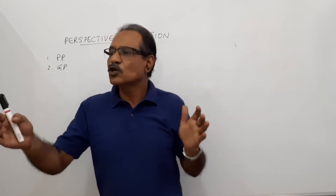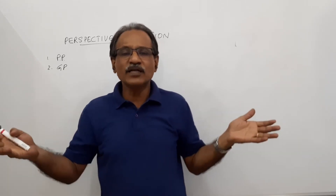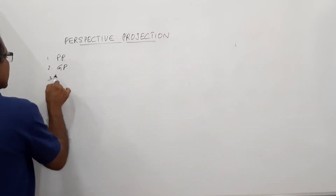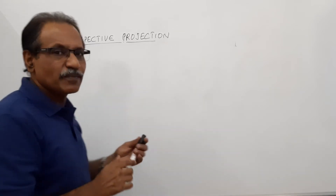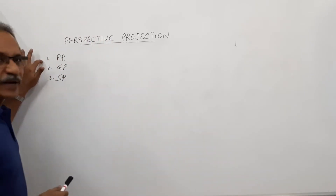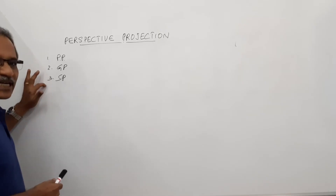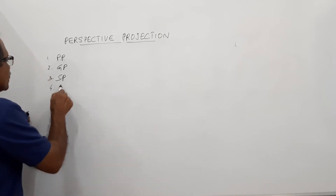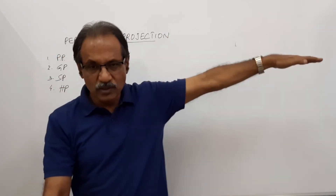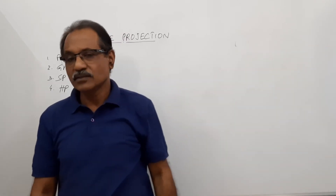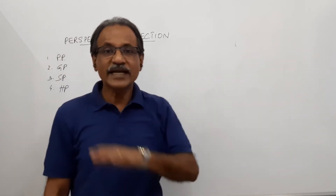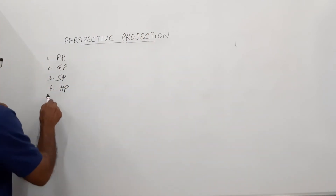If there is an object, you can look from various places. Depending upon the place from which you look, the view which you see will be different. That is the station point (SP) — the location of the eye of the observer. The fourth term is the horizon plane. The horizon plane is the plane which passes through the eye and is parallel to the ground.